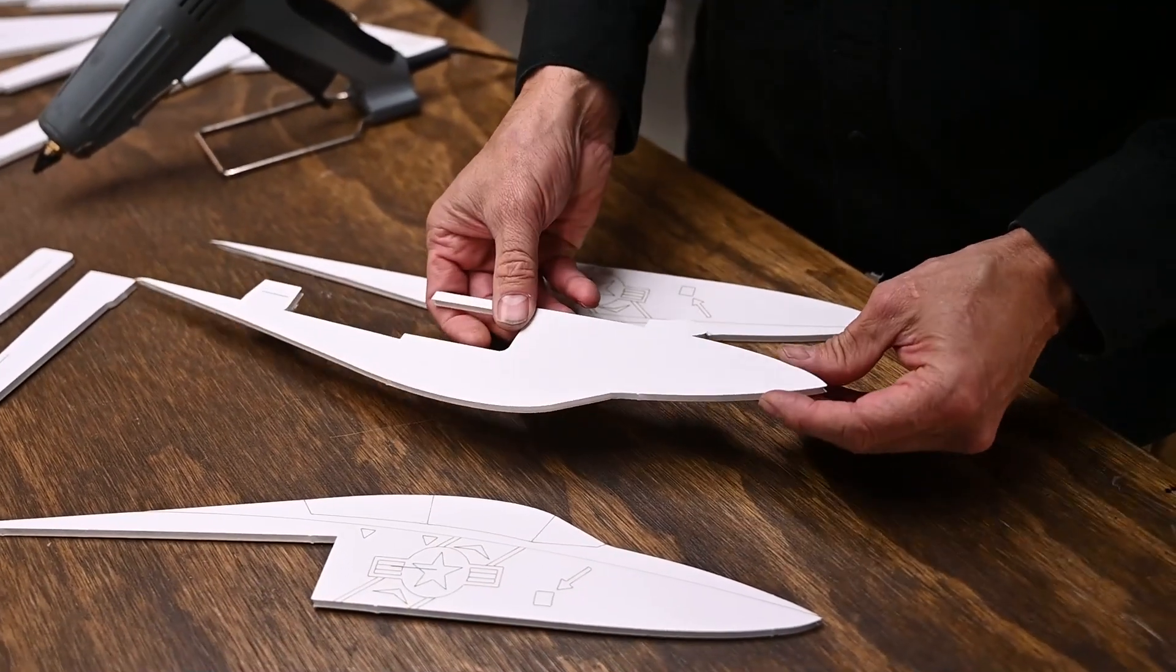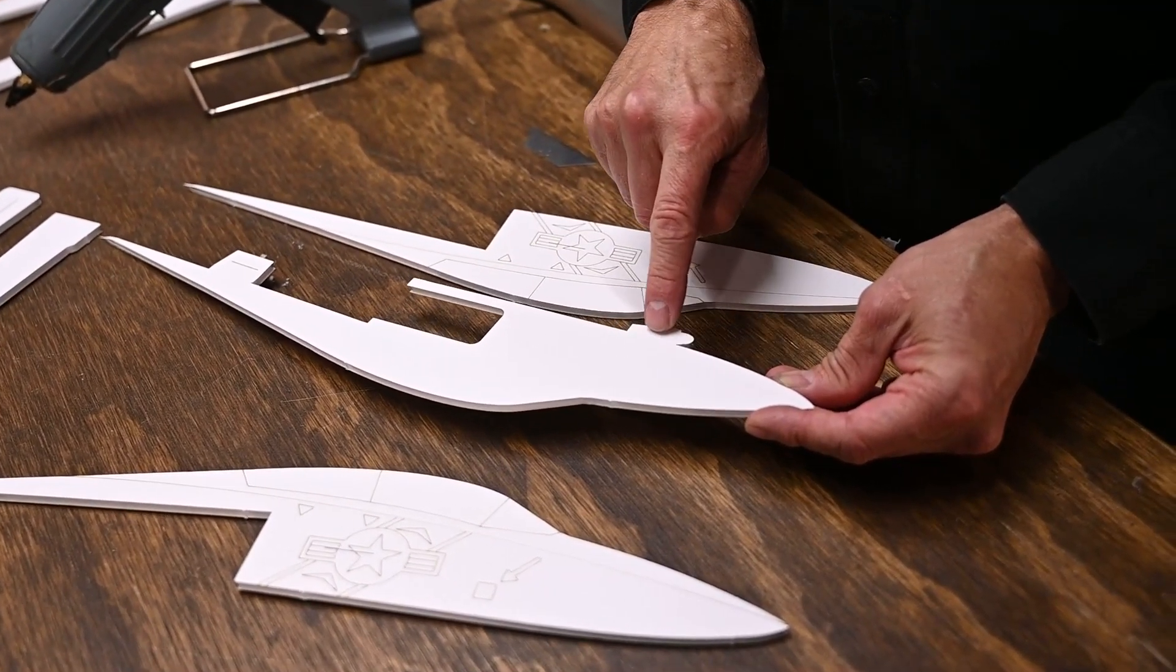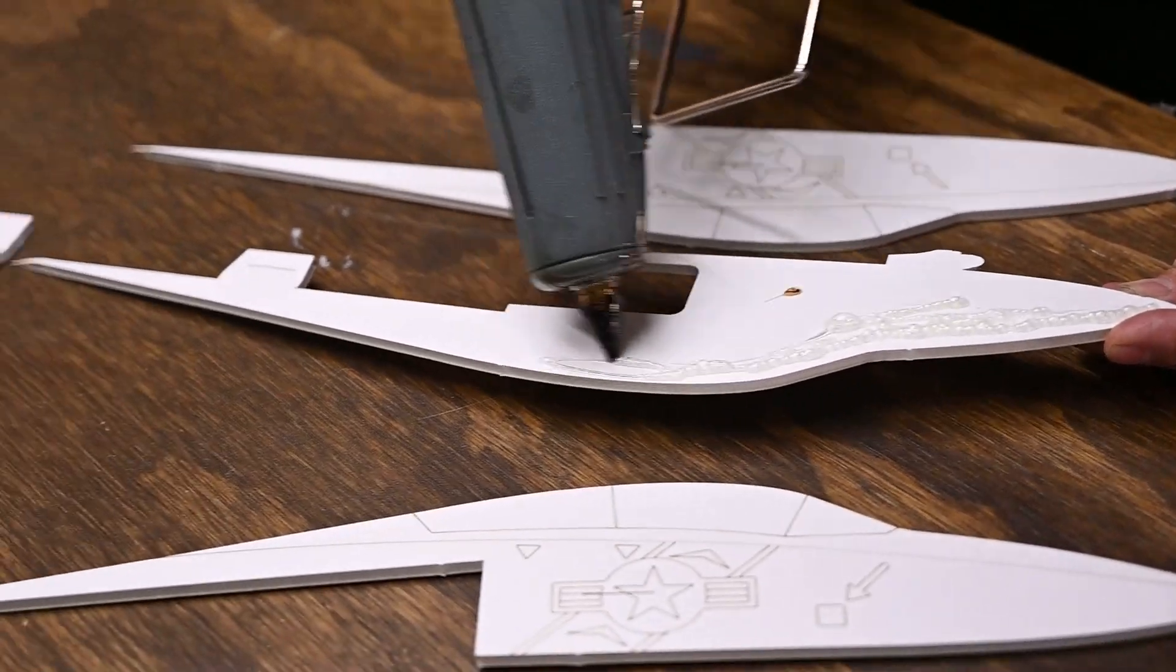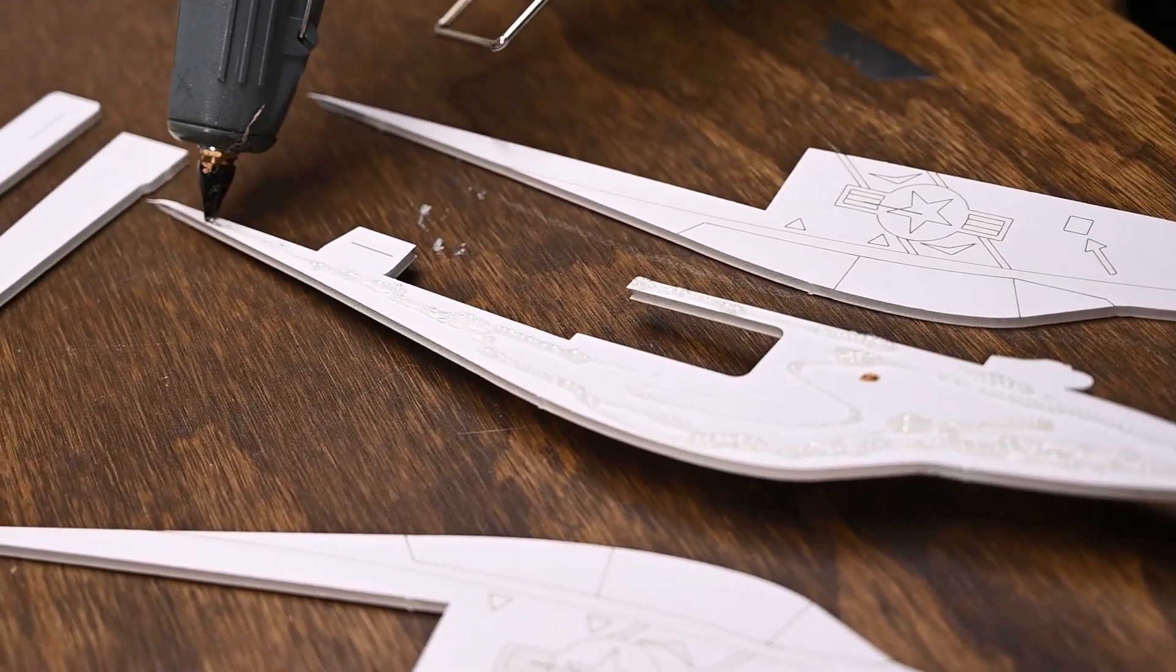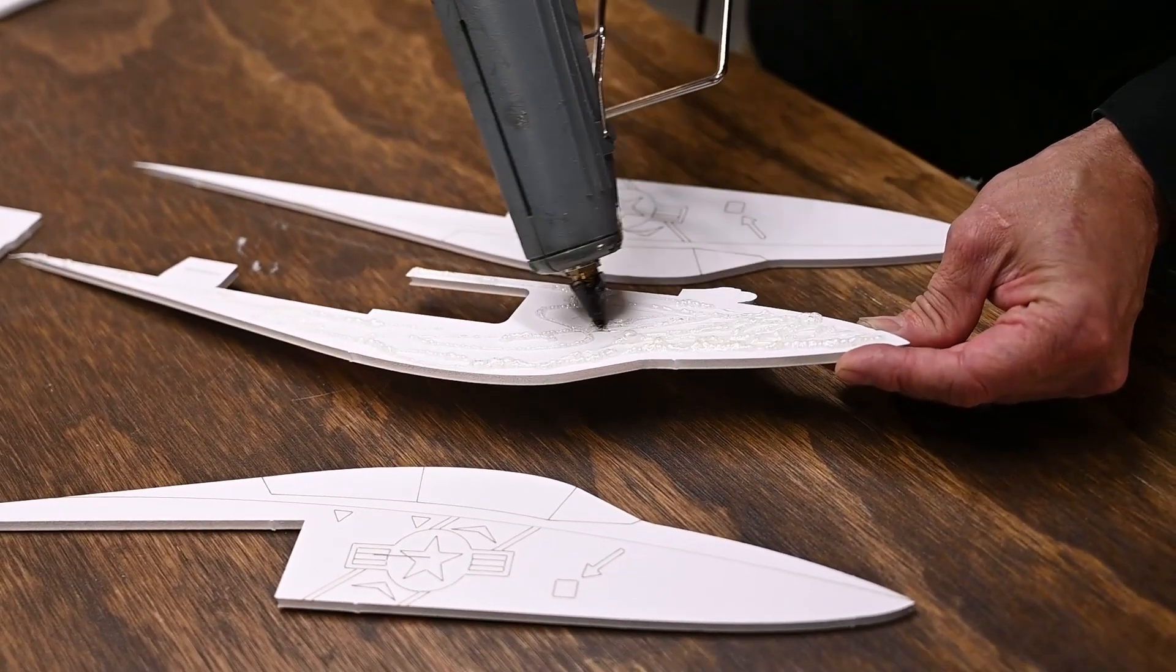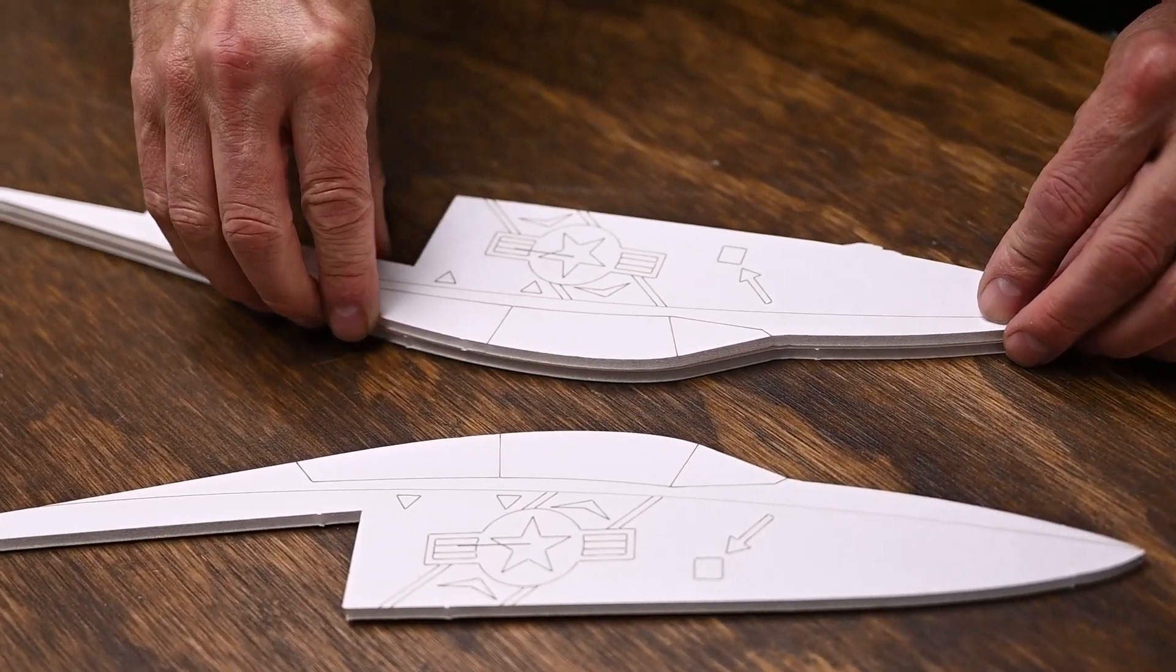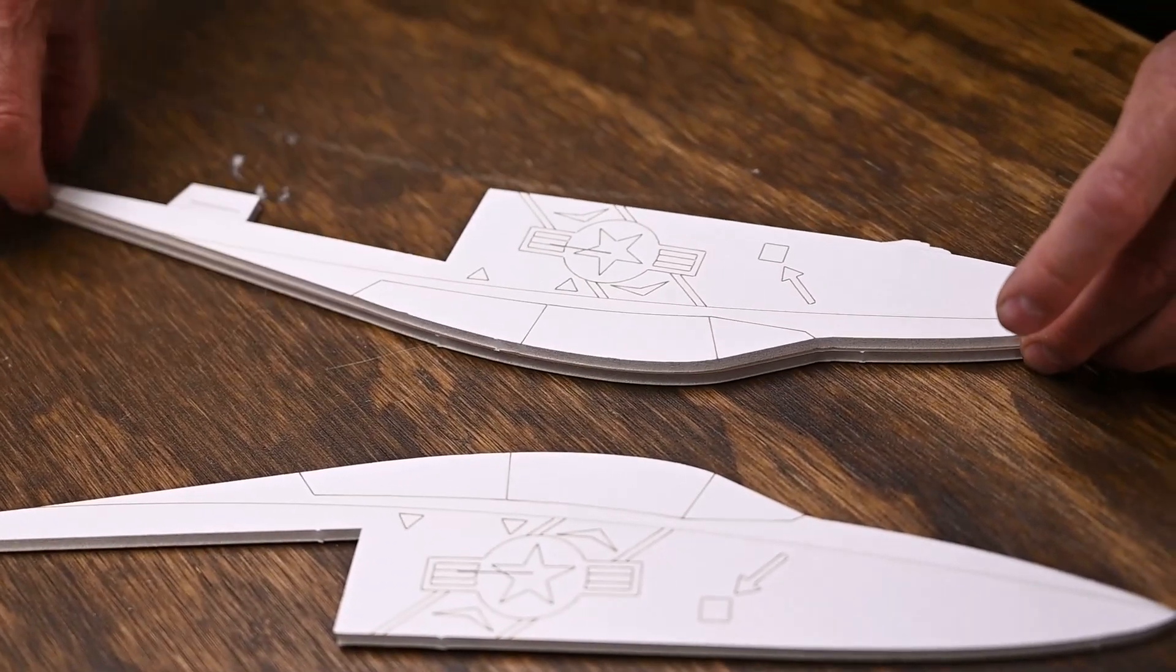We're going to add glue to the center part. Whenever we add glue, we want to make sure that we do not put glue here, or here on this tab at the back. Since this is going to be a chuck glider, we want to make sure that we get plenty of glue up here at the nose, because this is going to be taking a lot of abuse. Make sure everything is lined up front to back, and we'll hold this in place for a few seconds.